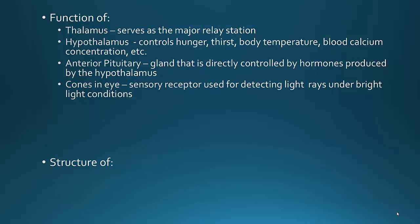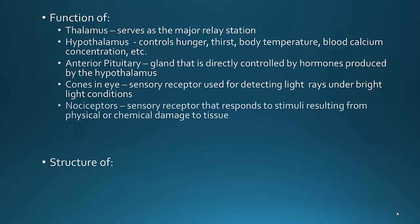When we're talking about certain receptors of the nerves, the cones in the eye are specific. These are sensory receptors used to detect light rays under bright light conditions — this helps you have sharpness of vision as well as color vision. Nociceptors are sensory receptors that respond to stimuli resulting from physical or chemical damage to tissue. These are also known as pain receptors.